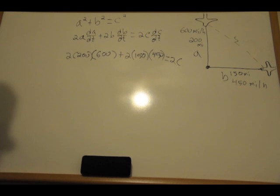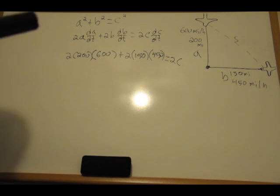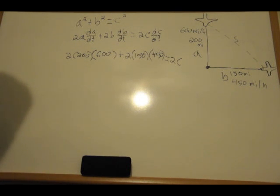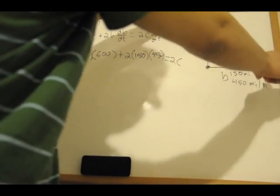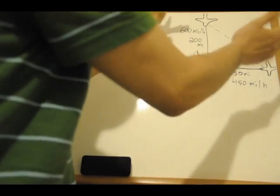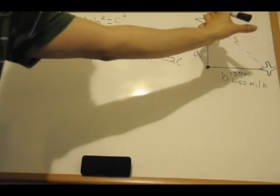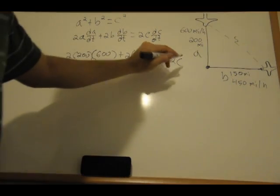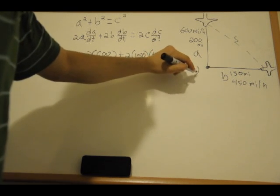Now we have a and b so we just use Pythagorean theorem to find c. I assume that everyone knows how to use the Pythagorean theorem so I won't write out the steps, I'll just do it in the calculator quickly. So that's going to be 250. So at this point, this is like t equals zero, that's where the problem starts - they're 250 miles away from each other.